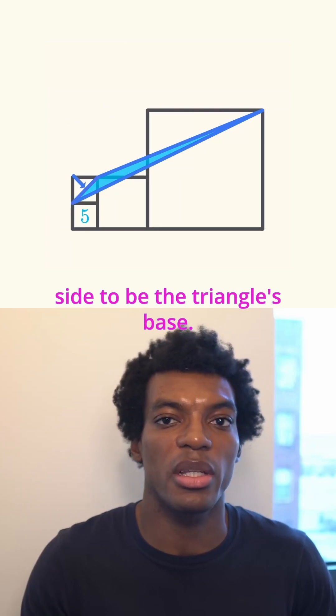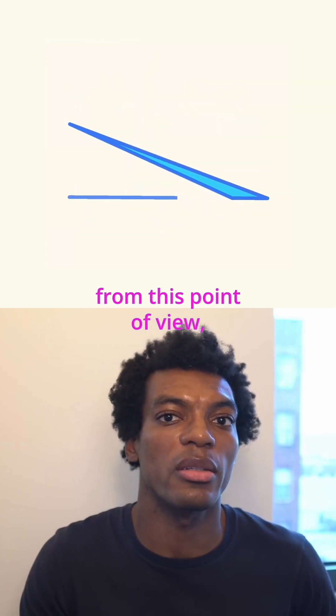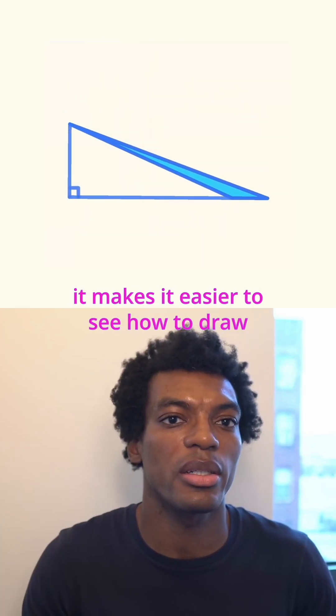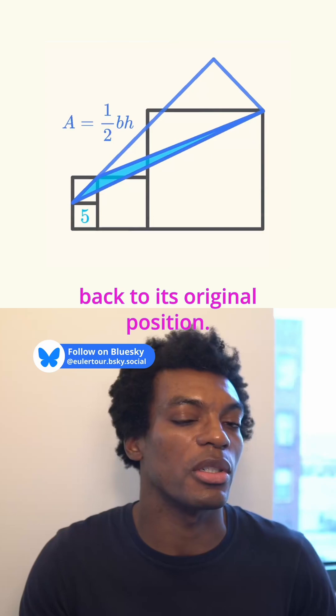We'll choose this short side to be the triangle's base. It may seem like an odd choice, but if we look at the triangle from this point of view, it makes it easier to see how to draw the base and the height. Keep this visual in mind as we flip it back to its original position.